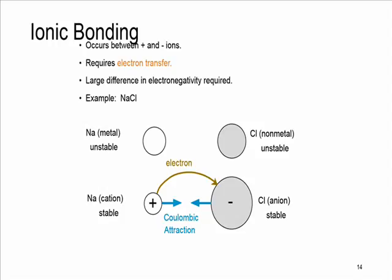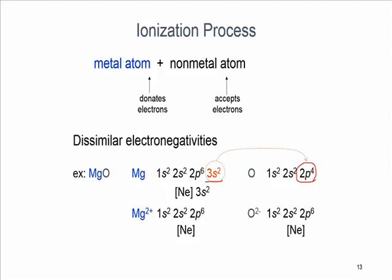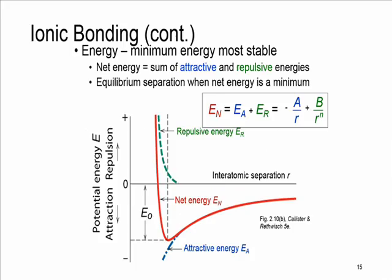This is usually found in compounds between metallic and non-metallic elements. Atoms of metallic elements easily give up their valence electrons to the non-metallic ones. For example, metallic Na gives electrons to chlorine. In this process, all the atoms reach stable or inert gas configuration as we showed here. They reach the configuration of neon, which is an inert gas.